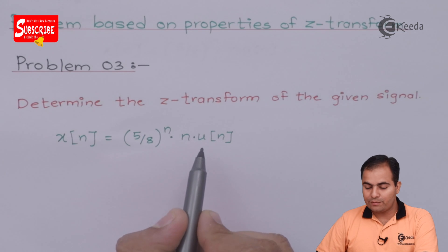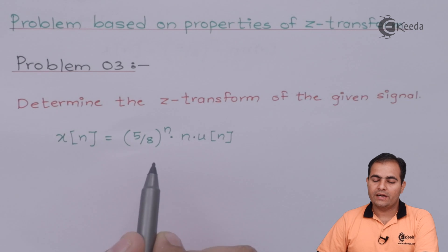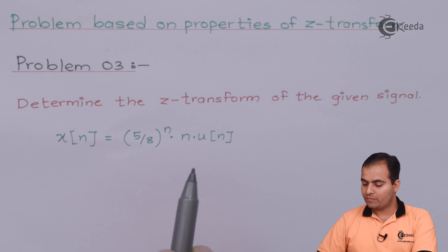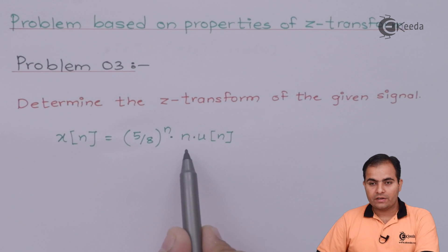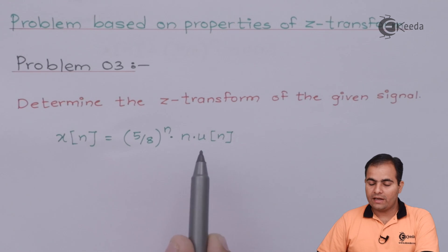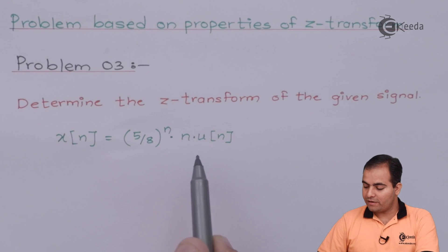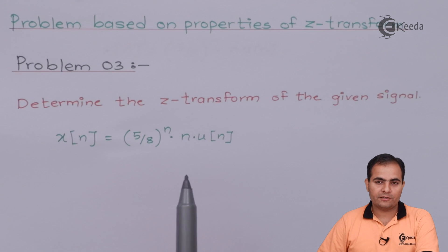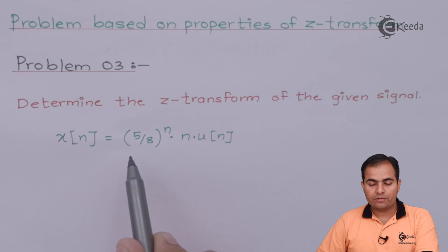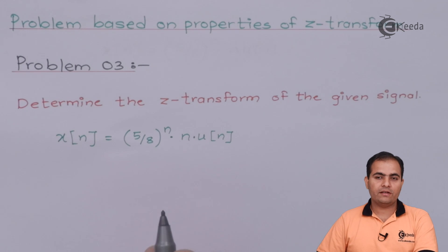Since the input sequence is multiplied by n, we also have to use the differentiation property. We will apply the differentiation property first and then the time scaling property. If you apply time scaling first, it will be difficult — you may forget to write the value of a when differentiating. So we apply Z-transform first, then differentiation, and later time scaling.